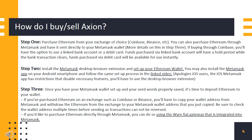Step 3: Once you have your Metamask wallet set up and your seed words properly saved, it's time to deposit Ethereum to your wallet. If you've purchased Ethereum on an exchange such as Coinbase or Binance, you'll have to copy your wallet address from Metamask and withdraw the Ethereum from the exchange to your Metamask wallet address. Be sure to check the wallet address multiple times before sending, as transactions cannot be reversed. If you'd like to purchase Ethereum directly through Metamask, you can do so using the Wyre Payment Gateway that is integrated into Metamask.